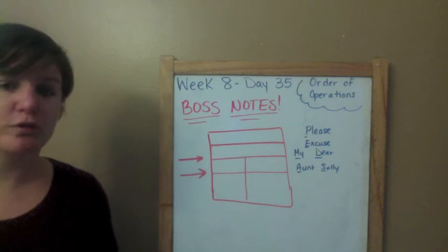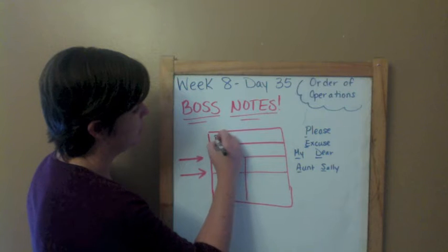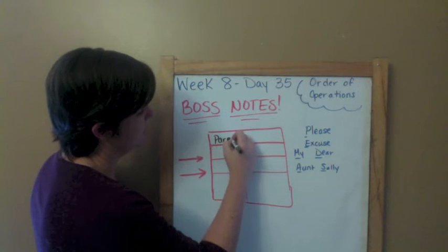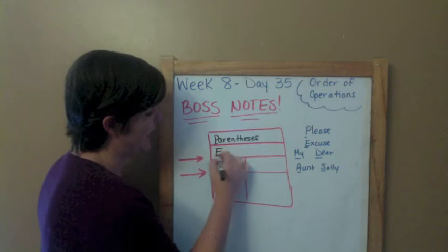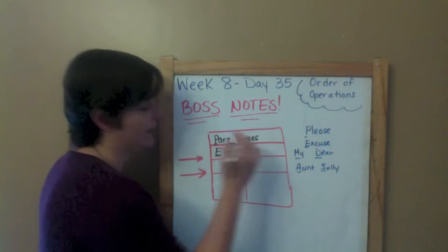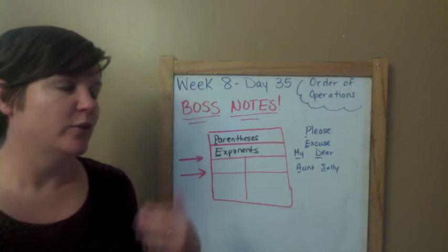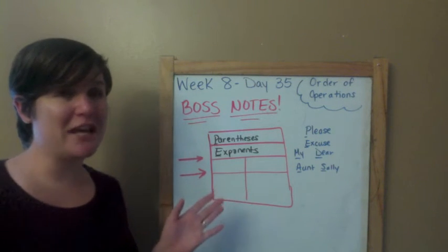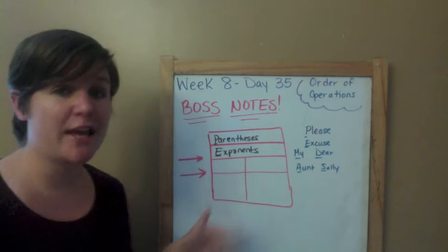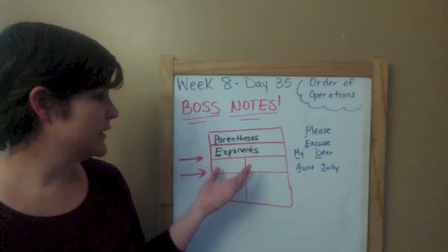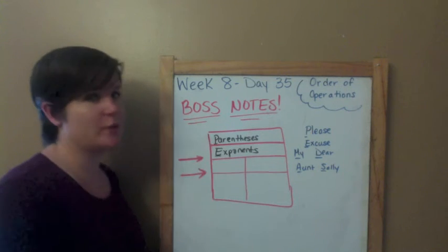We're going to plug in what P, E, M, D, A, and S all mean. The P stands for parentheses. E stands for exponents. Now you're not going to have too many problems with exponents in 5th grade. You might be thinking that in week 8 we did powers of 10 and those had exponents — yes. In 5th grade, the only exponents are powers of 10, but that's more of a 6th grade thing. So you're not going to see too many problems in this packet with exponents.